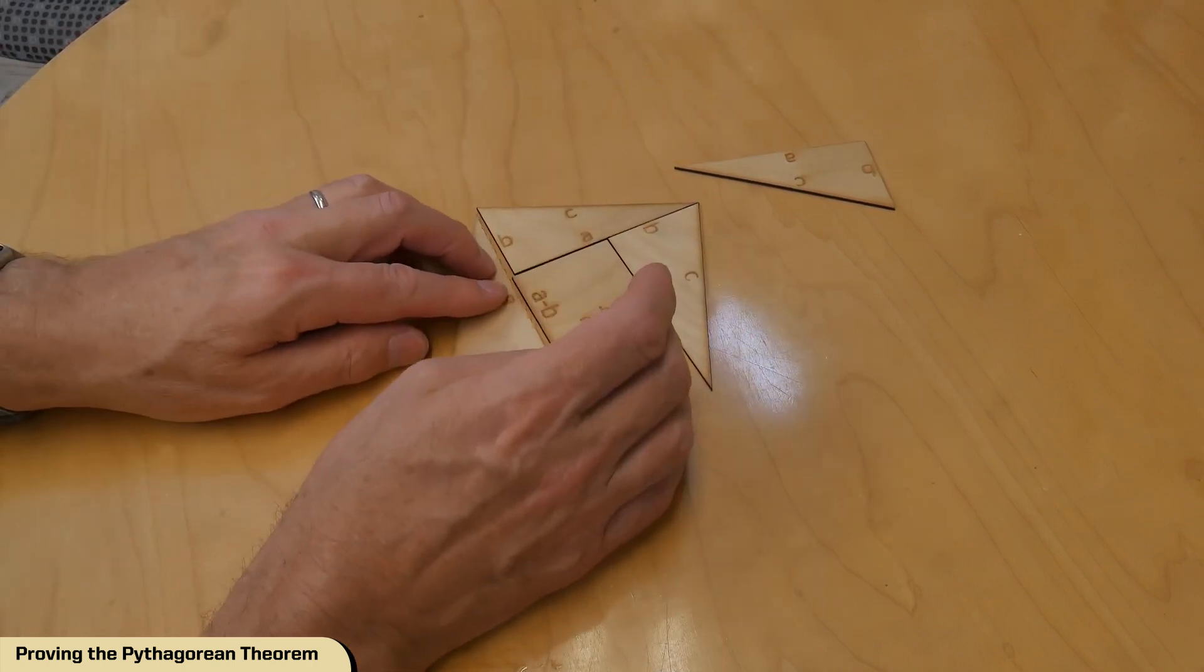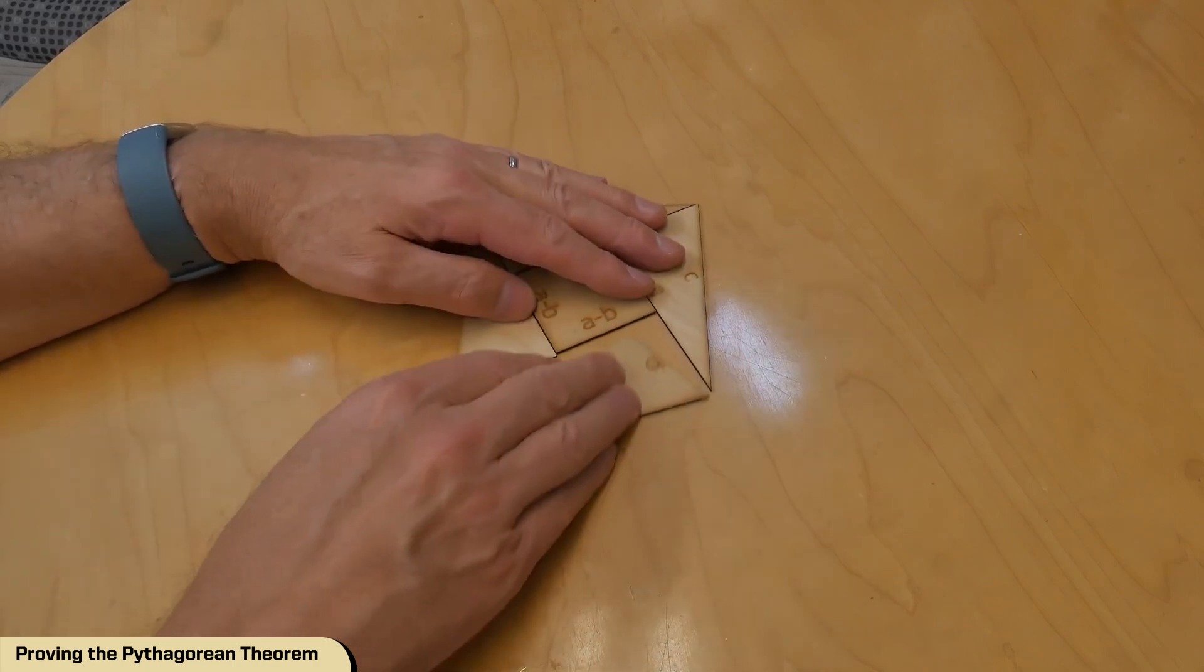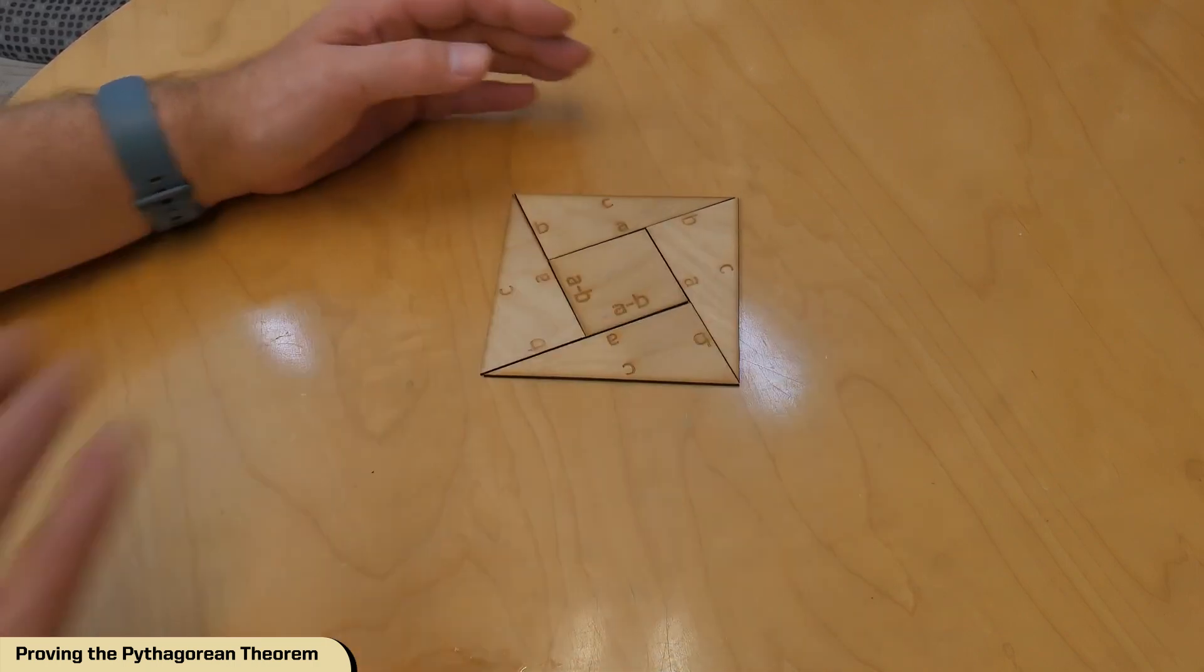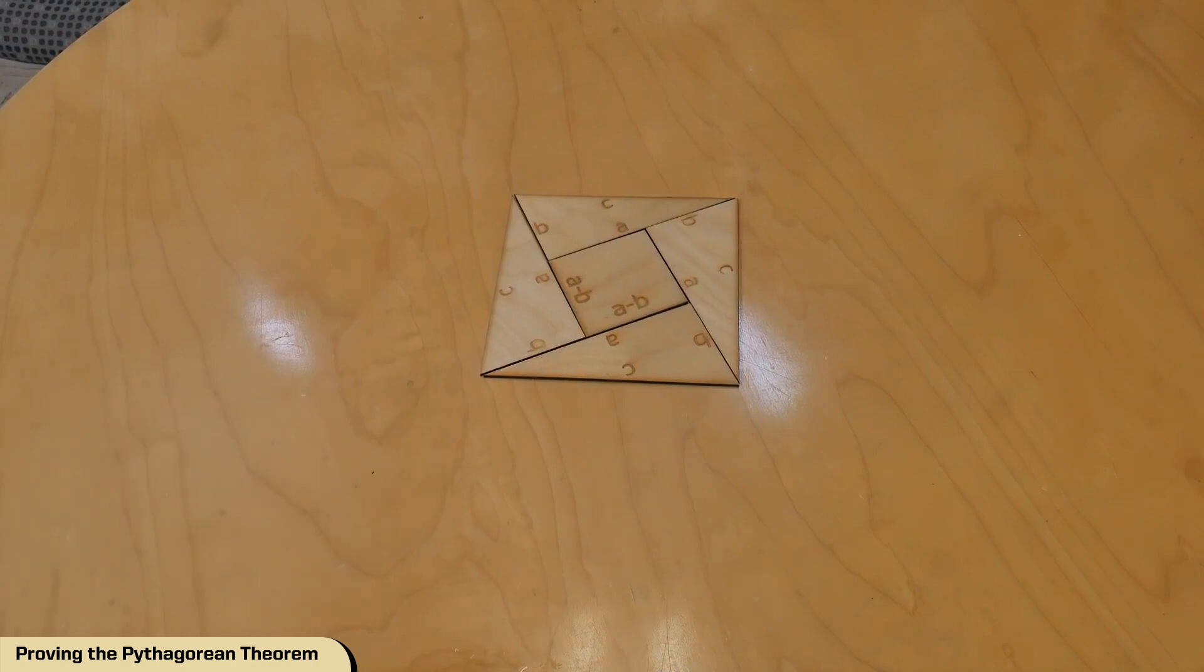Let's see, maybe do that and do that. Okay, you see that? There we go. I made a square, a larger square, out of those four triangles and that little square.